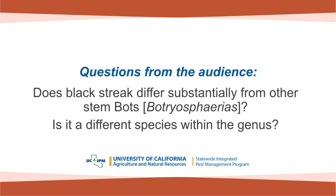Q: Does black streak differ substantially from other stem Botryosphaeria? Is it a different species? When I say Botryosphaeria, I'm talking about similar fungi — there are at least three different large genera similar to Botryosphaeria, about 15 that key on DNA. A researcher was working on black streak and found it's different. For years it was said this was a viroid — we don't know what viroids are so let's call it a viroid, put it in a box. At this point, I don't know if we know what the species is.